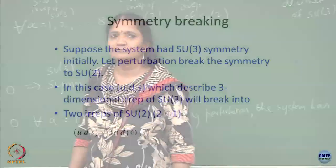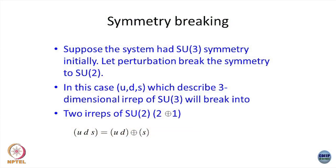Suppose the system has SU3 symmetry initially, and a perturbation breaks it to SU2. Then UDS, which describes the 3-dimensional irrep of SU3, breaks into two irreps of SU2: one is 2-dimensional (UD) and another is 1-dimensional (S). In Young diagram language, the UDS vector space breaks into a UD doublet vector space plus a 1-dimensional strange quark space.